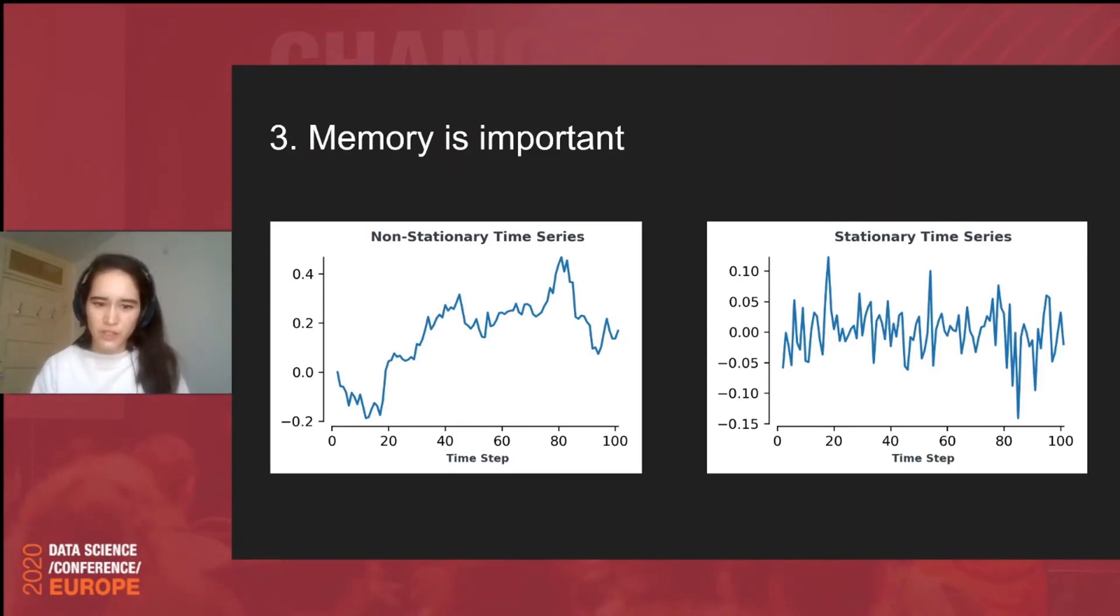And this is because this non-stationary time series, it has memory. But on the right, if we try to extrapolate the time series from time step 20 to 30 and predict what will happen at time step 40, well, it's a bit random looking and a bit difficult. And this is because we've inadvertently stripped out any memory from our time series by doing differencing.